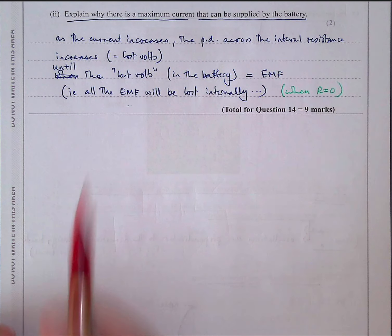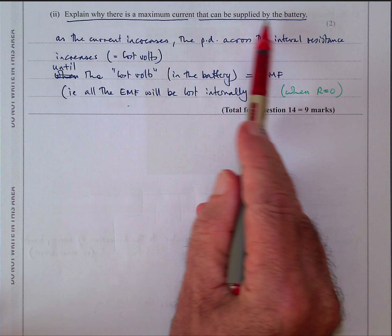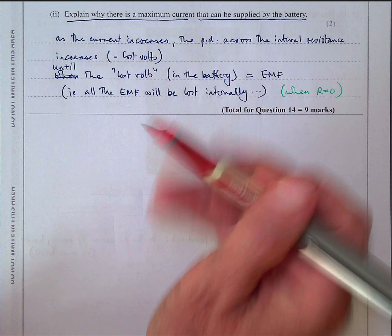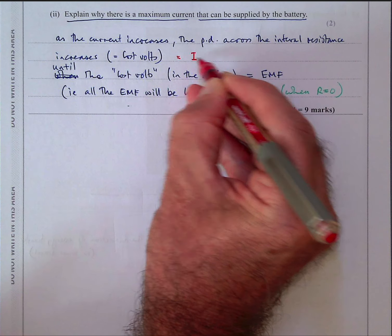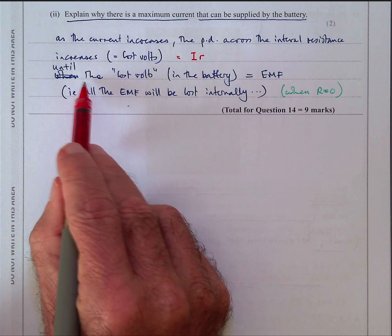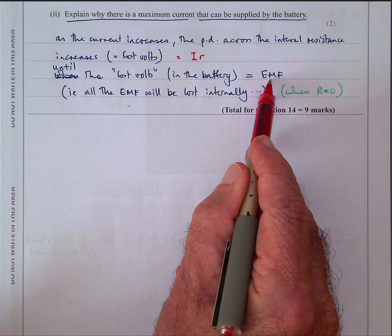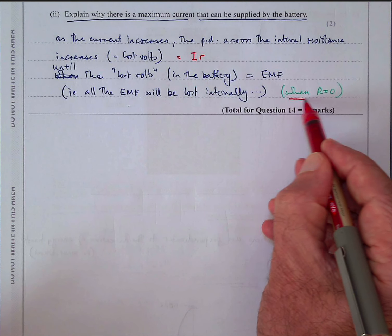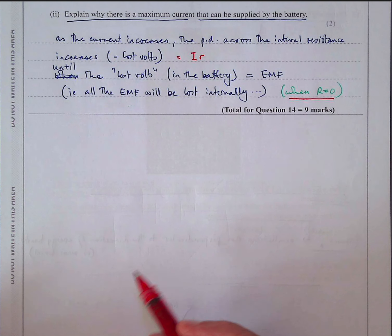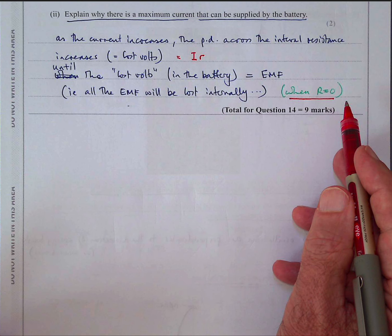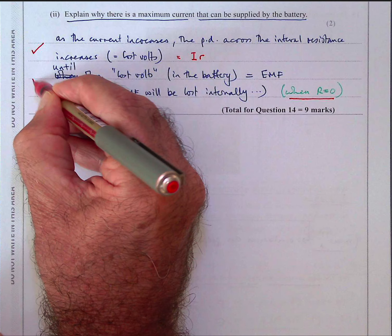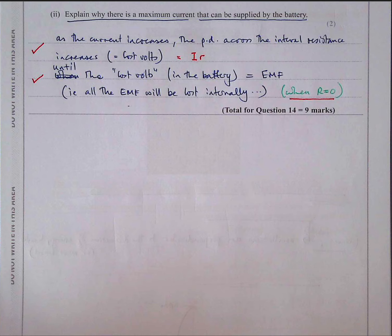Explain why there is a maximum current the battery can supply. As current increases, the PD across the internal resistance increases (lost volts = I × r). When the lost volts equals the EMF — i.e., when external resistance approaches zero — all the EMF is lost internally and no voltage can be supplied externally. That gives you your two marks.